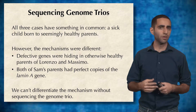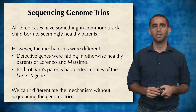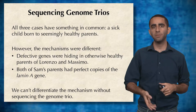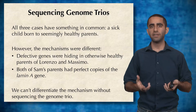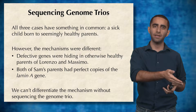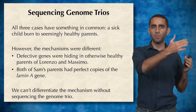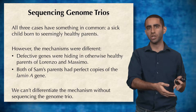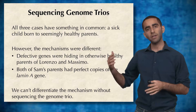However, the mechanisms behind these three diseases were actually different. In the cases of Lorenzo and Massimo, there was actually a defective gene that both parents had, and unluckily, each parent passed down the broken version of the gene to the child, resulting in the disease.